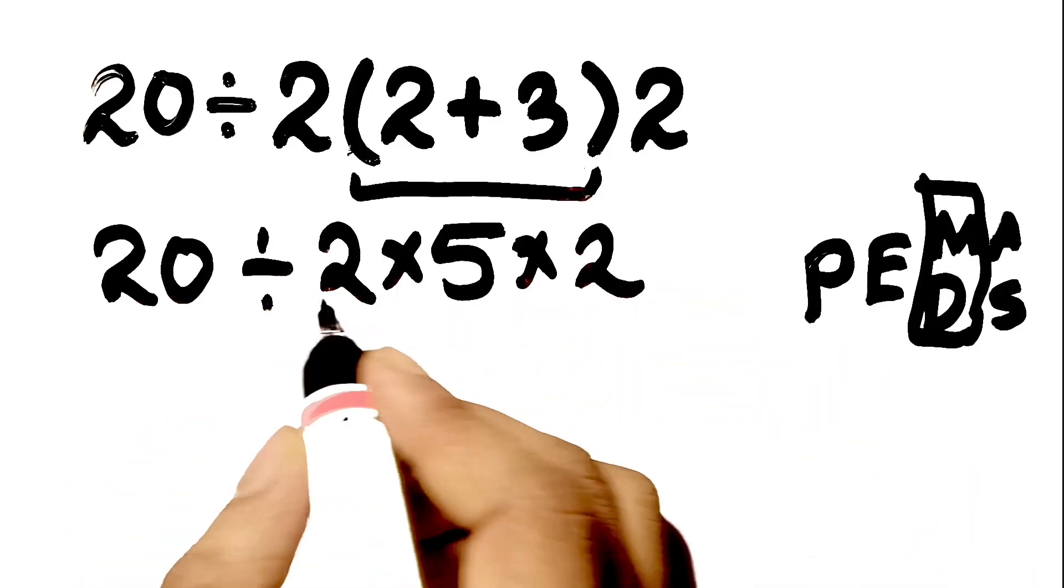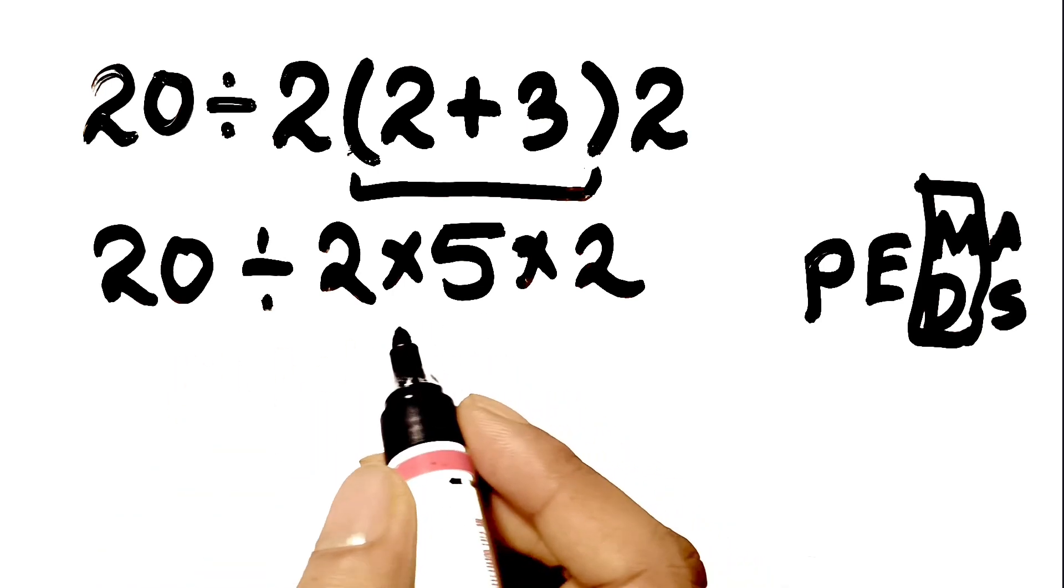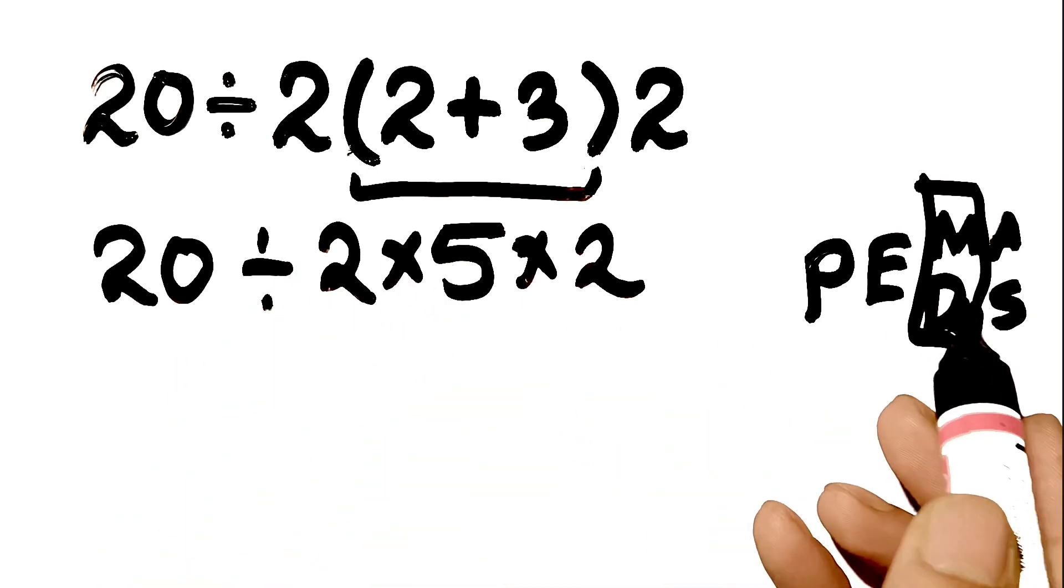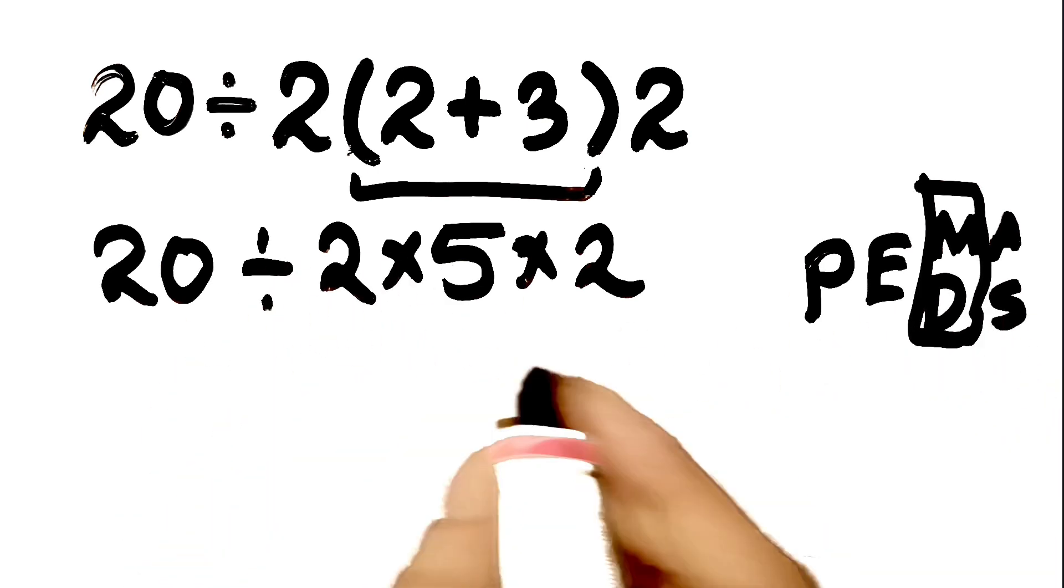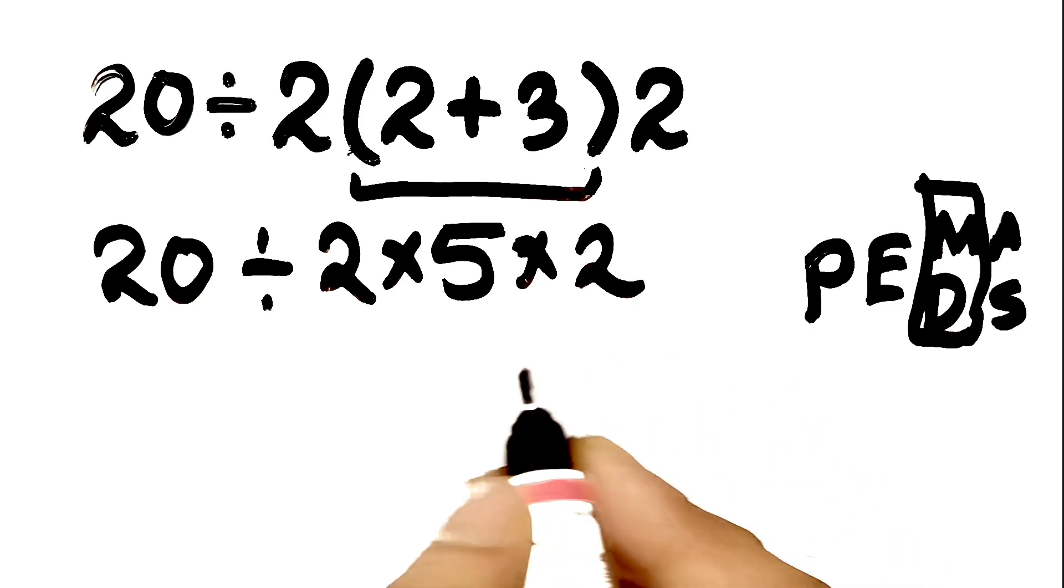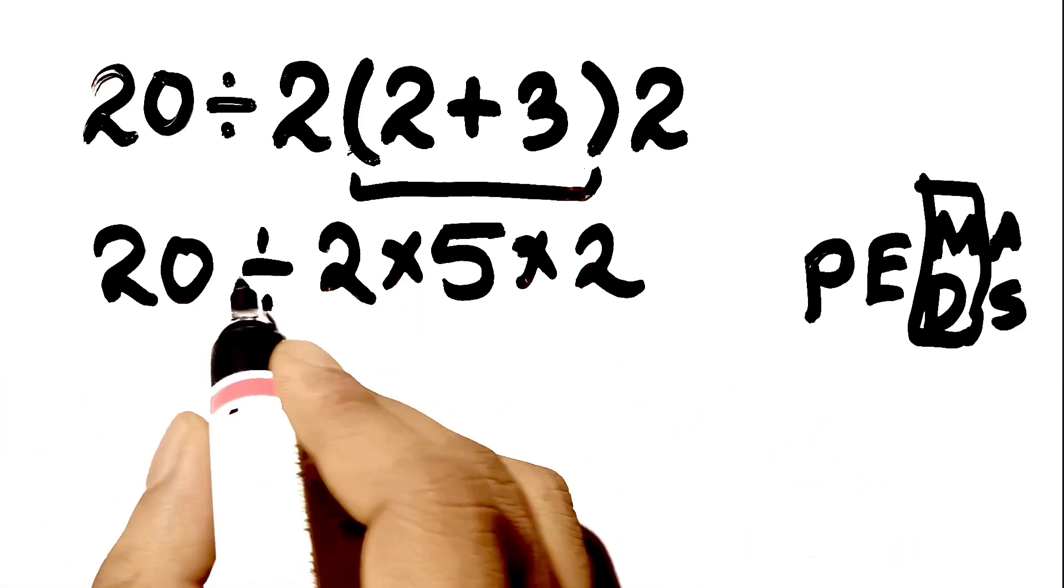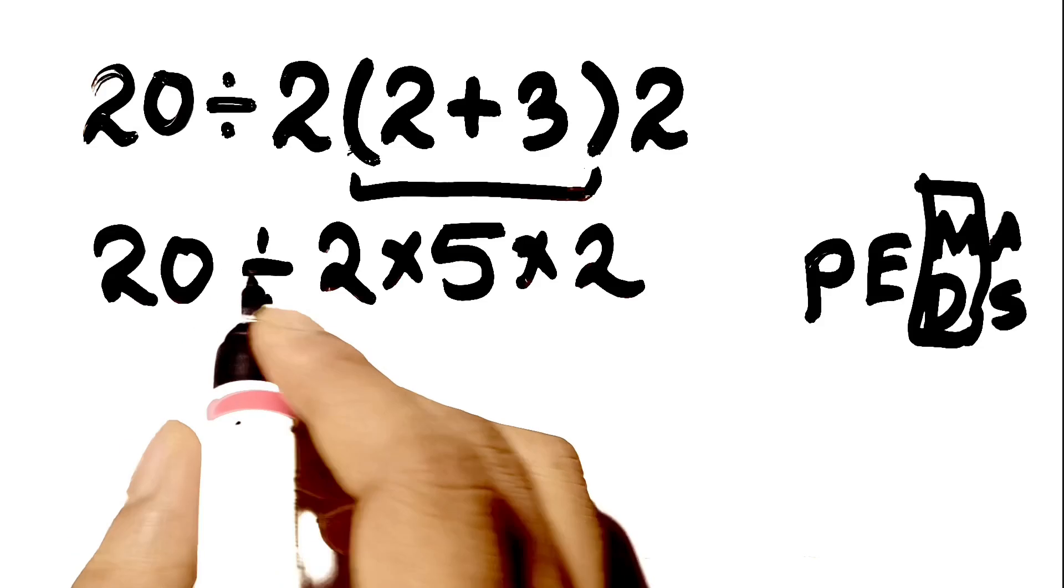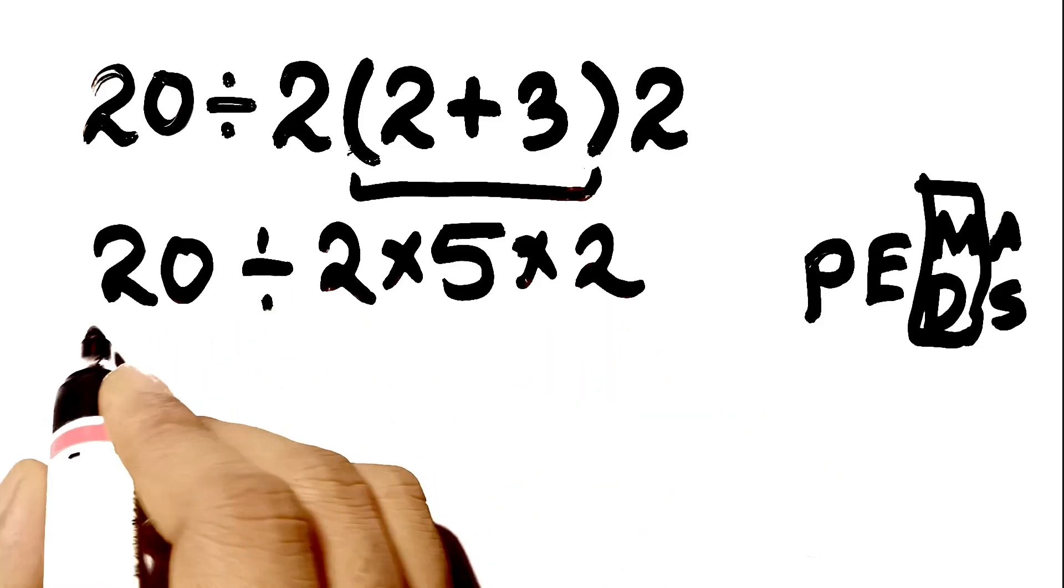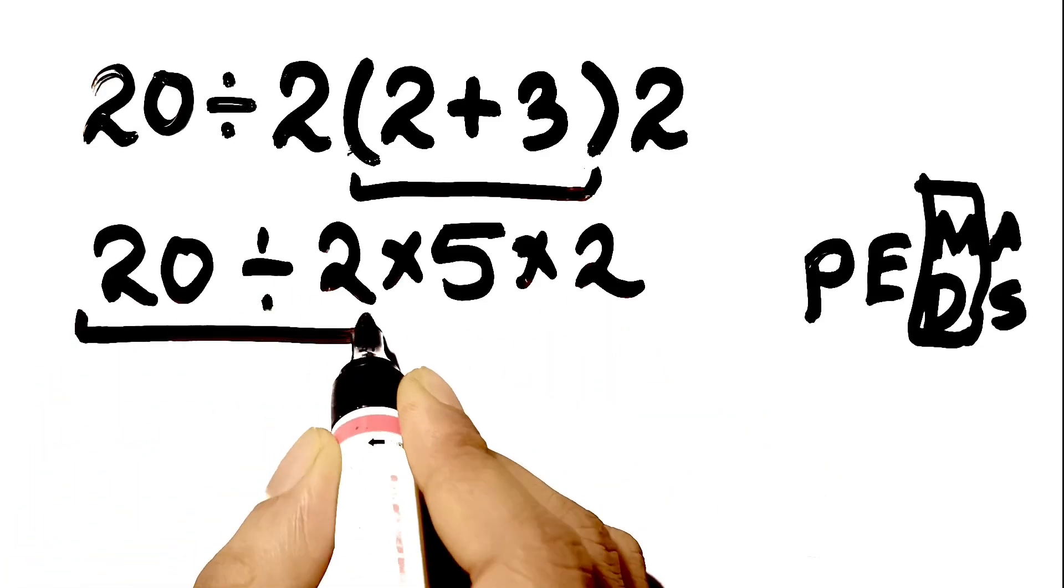Now we have 1 division and 2 multiplications. As I said, multiplication and division have equal priority, and we have to work from left to right. If we do the multiplications before this division, it is wrong. So here, first we have to do this division, starting from the left.